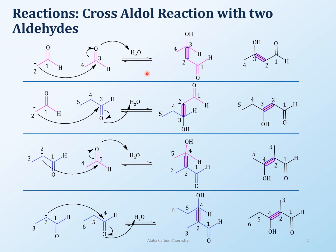Ethanal reacts with the carbonyl of another ethanal, and the alkoxide gets protonated to give the product. I've tried to write the two ethanals in a way so you can see the connection, numbered everything, and written it out in proper format. So ethanal reacting with propanal: propanal is carbons three through five.